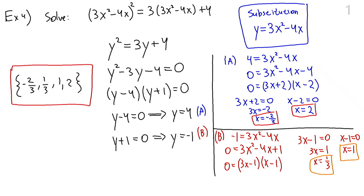We have four values of x that satisfy this equation. When doing a substitution, it is important to record that substitution — it is crucial for the second part. Once you reduce your complicated equation to a simple quadratic and solve it, remember you are only halfway there. In this case, y equals 4 and y equals negative 1 each led to two more quadratic equations, which we solved by factoring. Thank you.